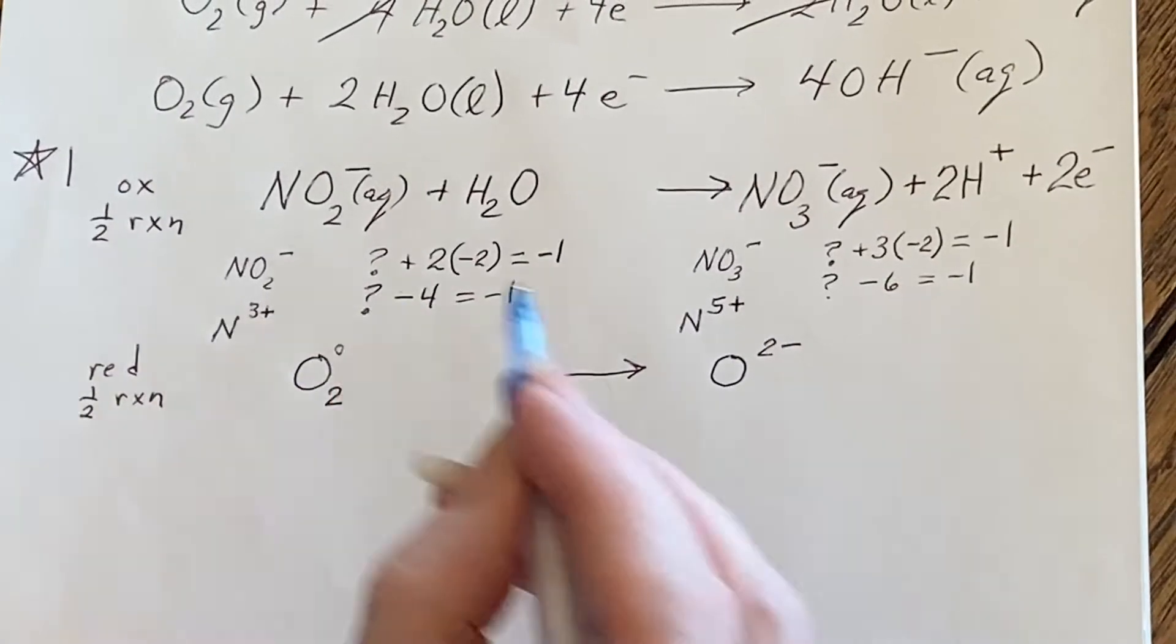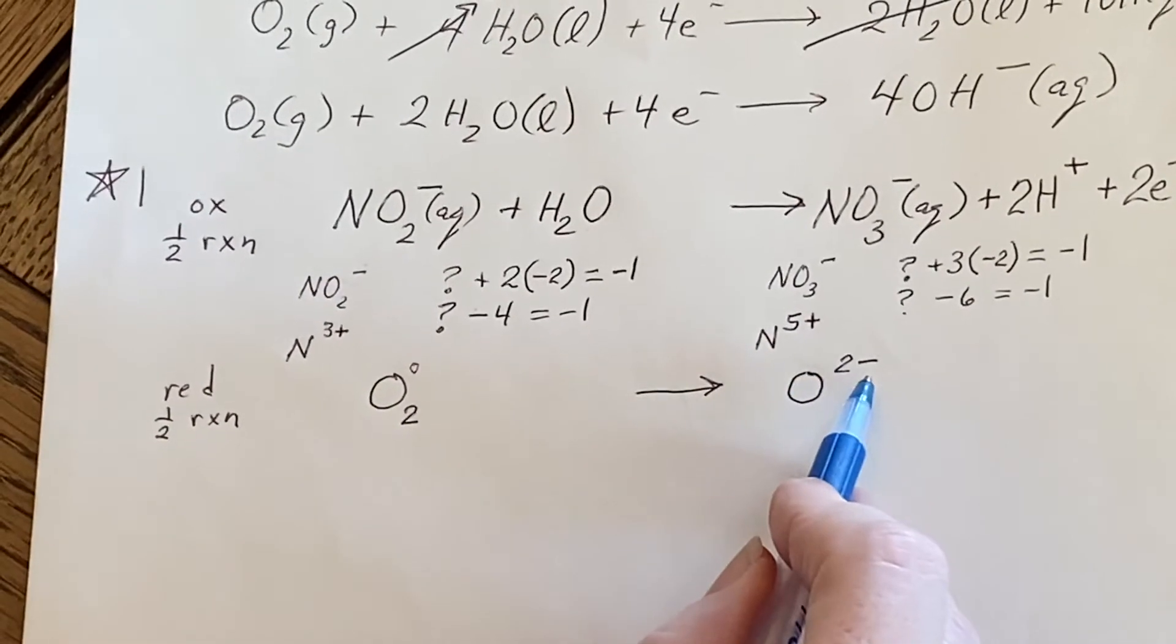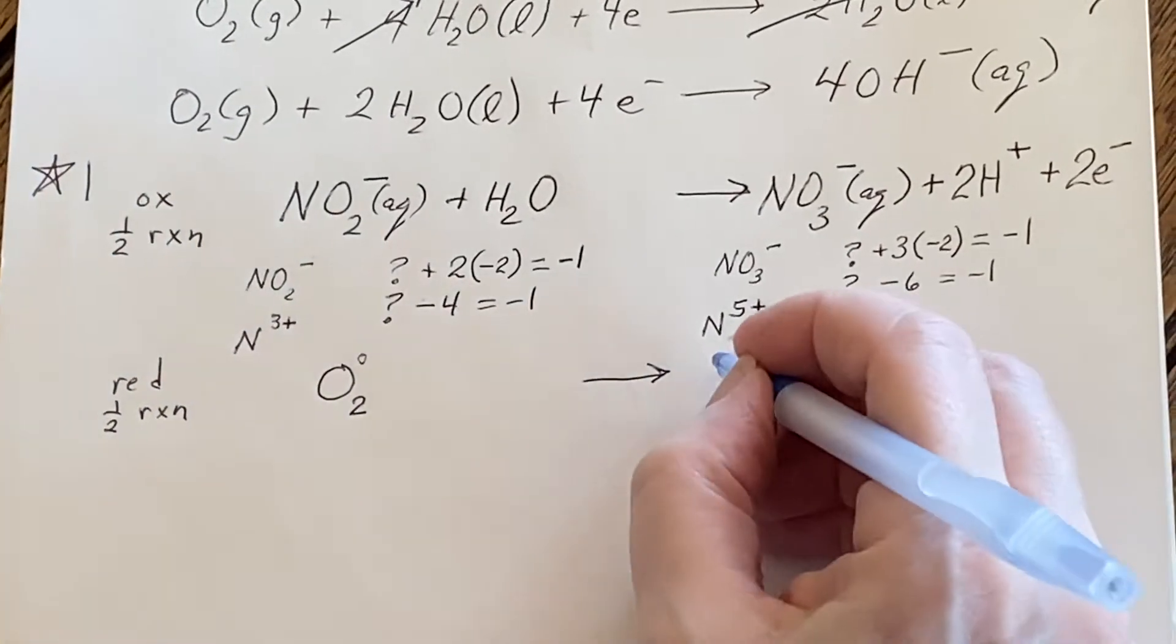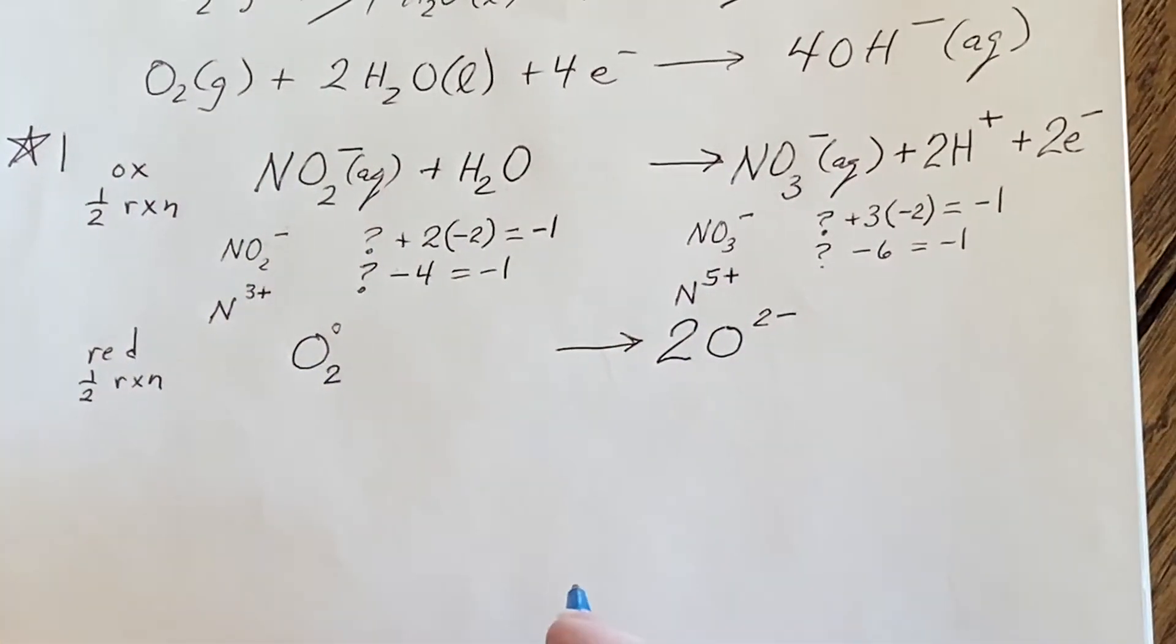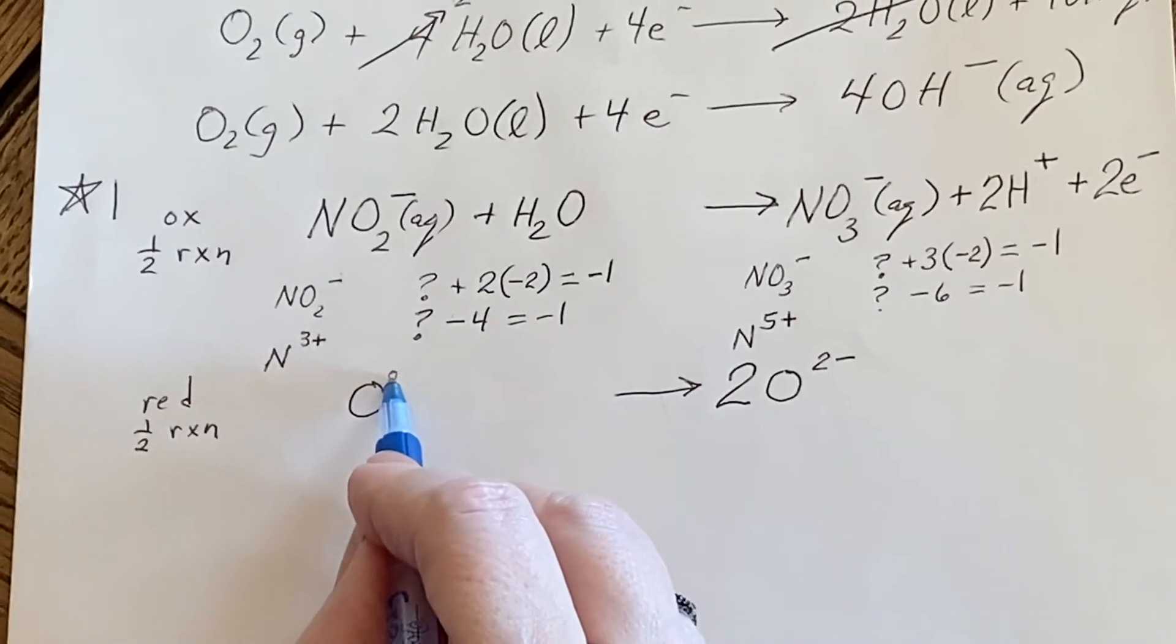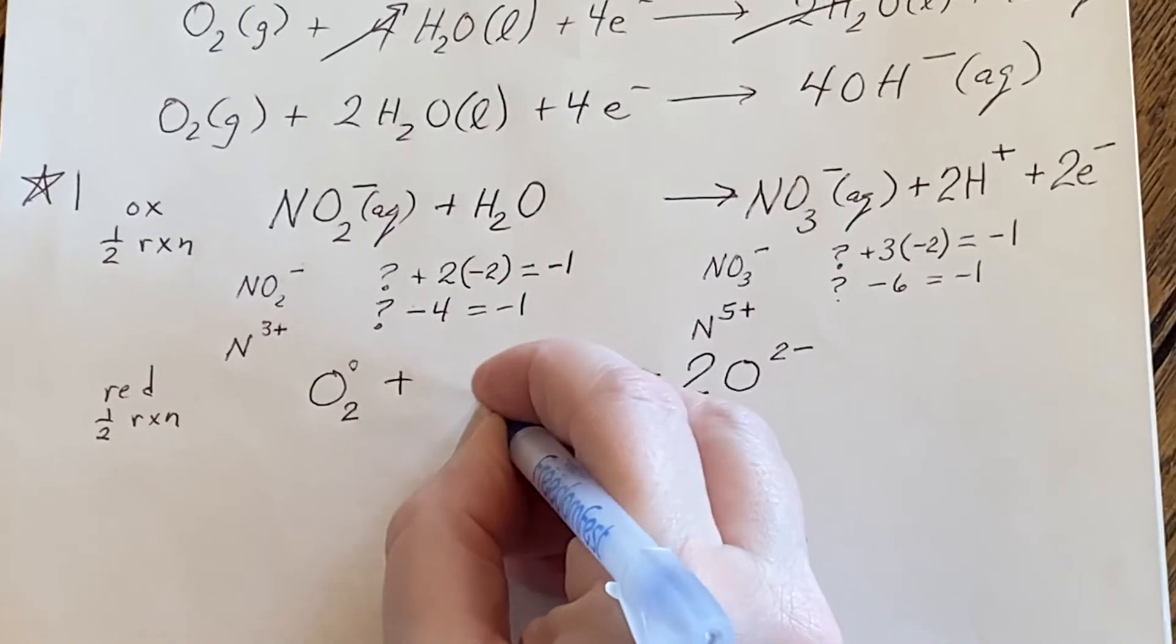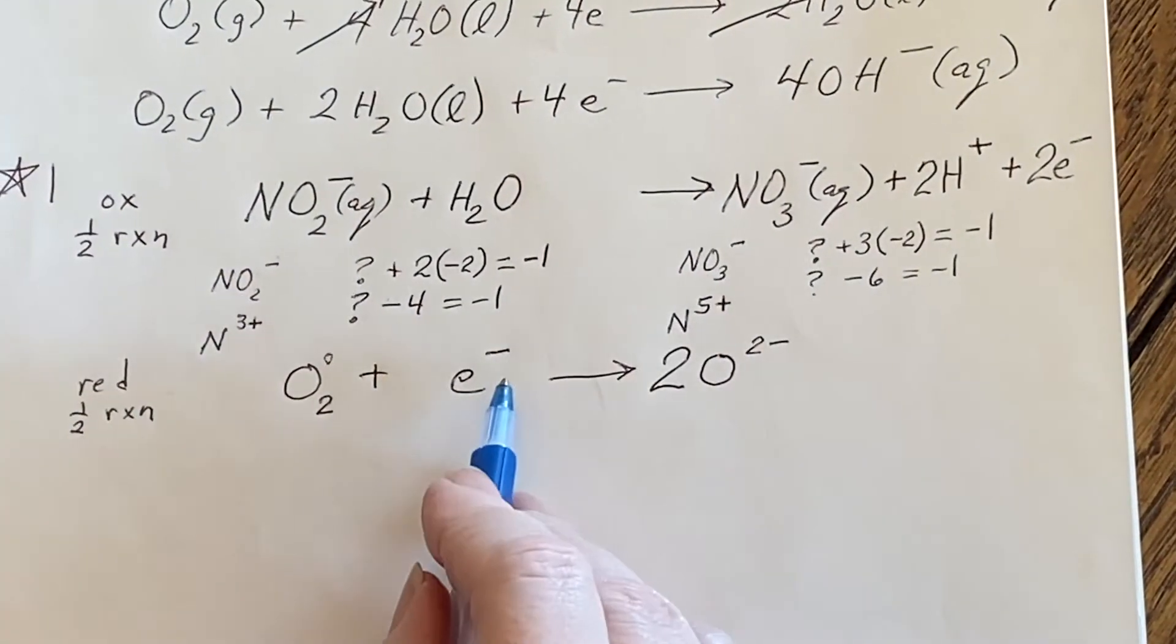This, well, as an element, oxidation state is zero. So how would I get those? Well wait, wait, wait, there's two of them. Oh, okay. Let's start with that. We better get the number right first. Okay. Now, how is it going to get from a zero to a negative two? Well, it's going to have to be adding electrons to do that. So how many do I need? Well, two times two. I'm going to need four of them.